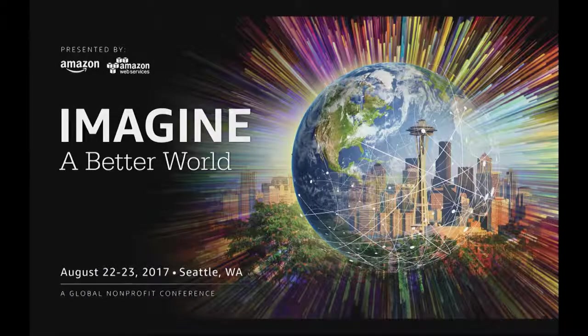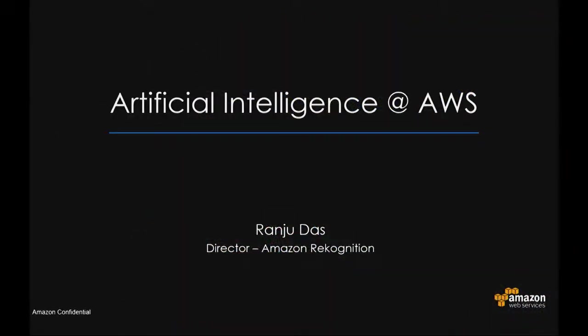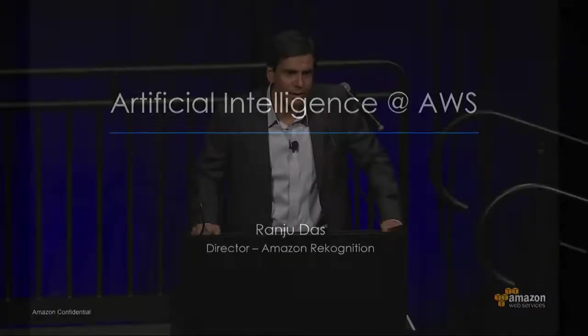Good afternoon folks. I have the fun job of keeping you interested after the lunch session. My name is Ranjudas. I'm the Director of Amazon Rekognition. I've been with Amazon for four and a half years and built Rekognition with the team, launched it at re:Invent last year. What I've been really involved with in the last few weeks and months is non-profits and how we can have a meaningful impact with AI, and that's been really personally useful for me.